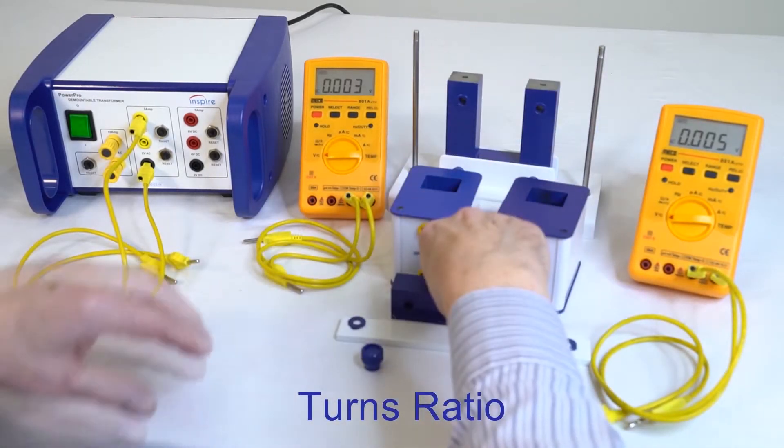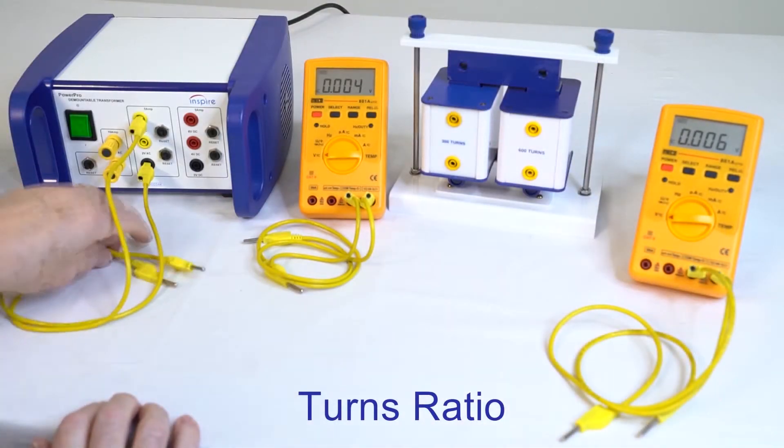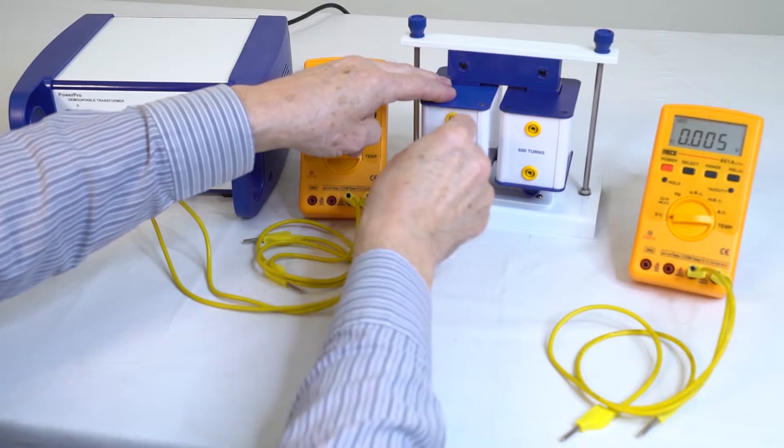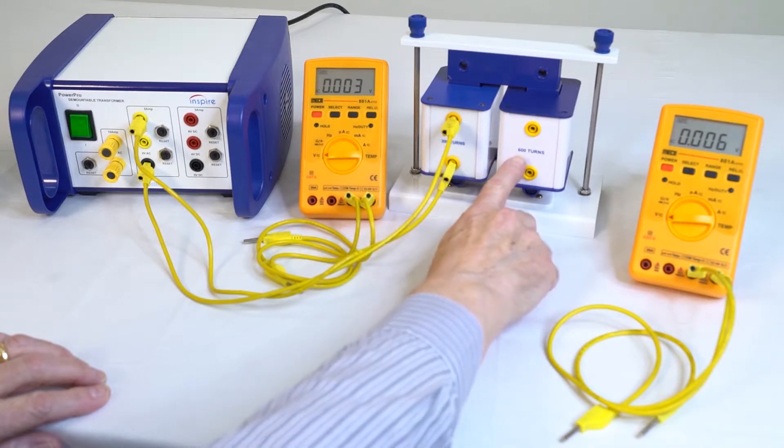Coils are fitted to the core and clamped. An AC supply is connected. The ratio of turns in this case is 300 to 600.